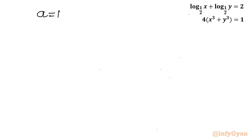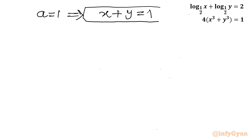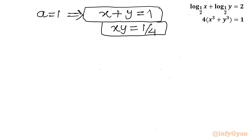Putting a equal to 1, and since a was x plus y, we get x plus y equal to 1. The second equation is xy equal to 1 by 4. This is now an easy system to solve.